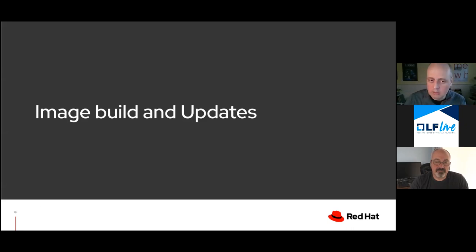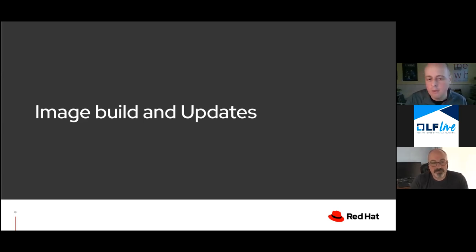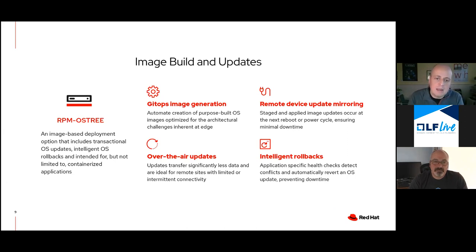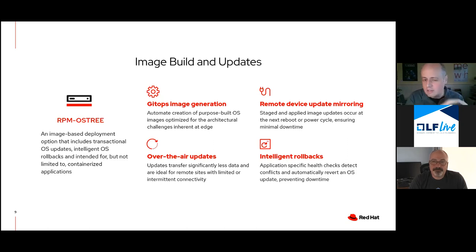We're going to start by looking at building these images, defining essentially a GitOps pipeline to create the images — how these images are put together based on LibOStree and RPM-OStree, everything you need to create these images and their layers, put them out where edge devices can get them, and update them. If you look at an edge server image, one of the key distinctions from a traditional RHEL OS is that we want to deliver it essentially as an image, almost like an appliance. The basis of that is LibOStree.